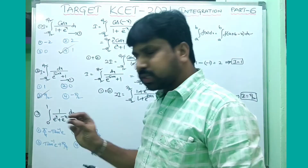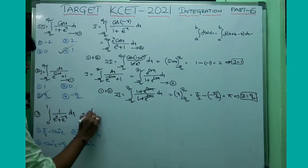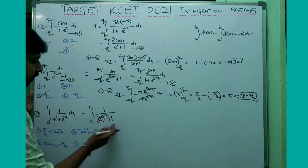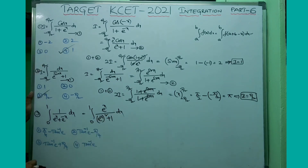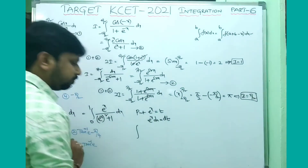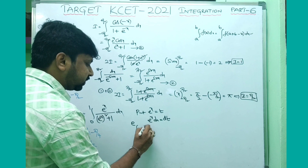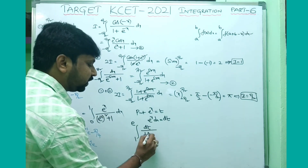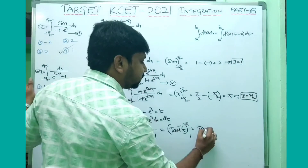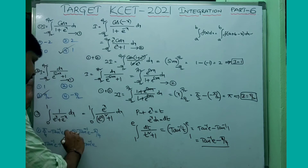For the third question, integral from 0 to 1 of 1/(eˣ + e^(−x)) dx: rewrite e^(−x) = 1/eˣ, take LCM to get eˣ/(e²ˣ + 1) dx. Use substitution: let eˣ = t, so eˣ dx = dt. Limits change: x=0 gives t=1, x=1 gives t=e. The integral becomes integral from 1 to e of 1/(1+t²) dt = [tan⁻¹t] from 1 to e = tan⁻¹e − tan⁻¹1 = tan⁻¹e − π/4.